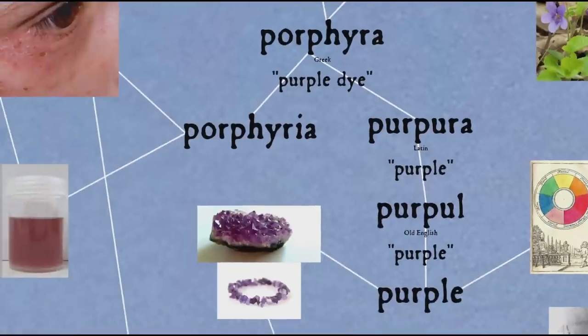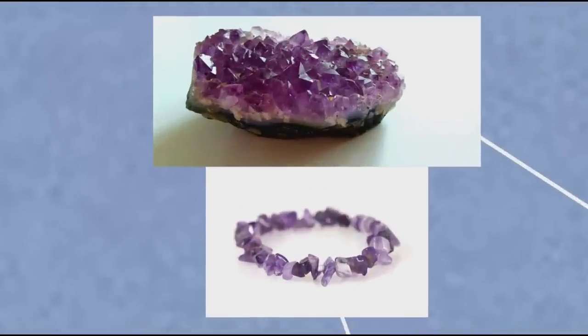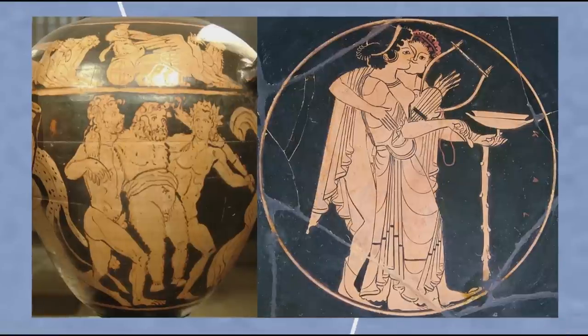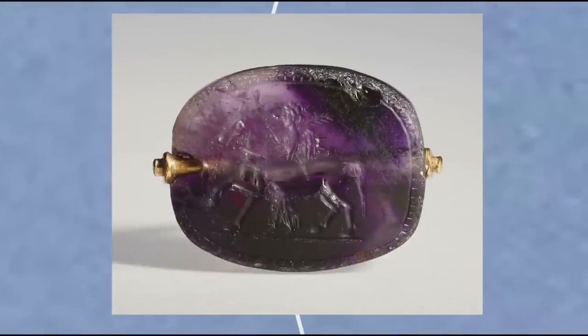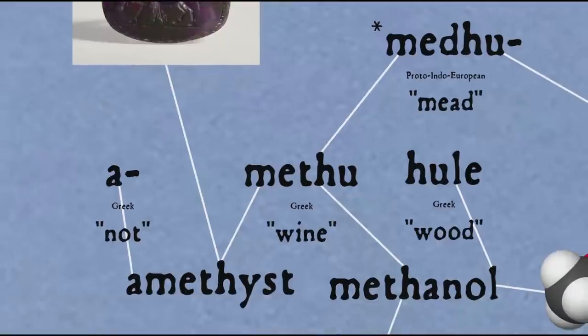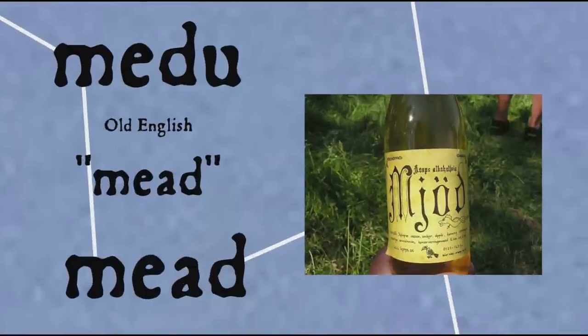There are other words sometimes used to refer to particular shades of purple because they refer to purple things, such as 'amethyst', a purple-coloured quartz. The ancient Greeks believed that amethyst could prevent drunkenness, perhaps through sympathetic magic, as the colour was similar to that of wine — so they wore rings of amethyst. That's how the stone got its name: in Greek it's made up of the negative prefix 'a-' and the word 'methu', which means wine, coming from the Proto-Indo-European root 'medhu' (mead) — which also leads to the Germanic-derived word 'mead', an alcoholic beverage made from honey.